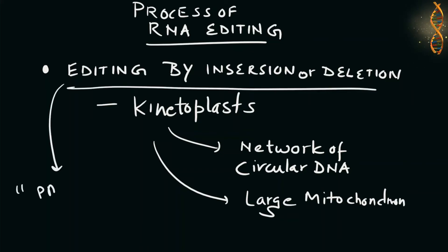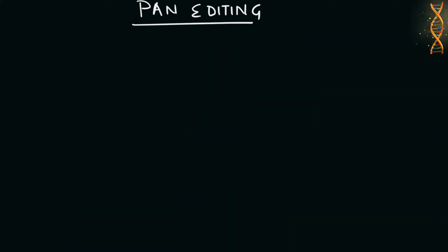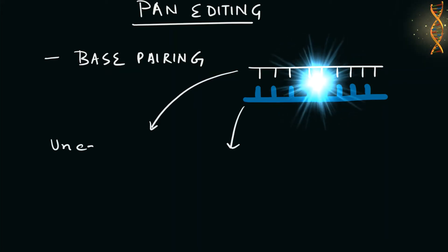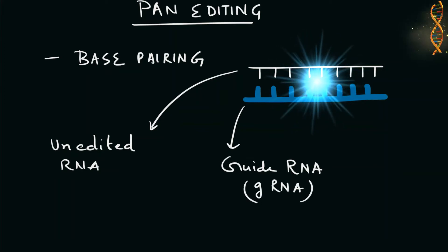Because this may involve a large fraction of the sites in a gene, it is sometimes referred to as pan editing. Pan editing starts with the base pairing of the unedited primary transcript with a guide RNA or gRNA, which contains complementary sequences to the region around the insertion or deletion points.